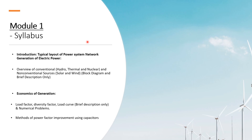In module 1 of the syllabus, there are two sections. One is introduction — typical layout of power system network and generation of electric power. The overview covers conventional sources: hydro, thermal, nuclear, and non-conventional sources. This is a brief description.